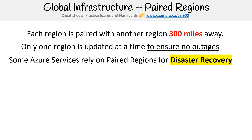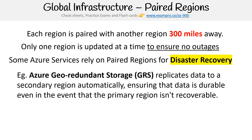Some Azure services rely on paired regions for disaster recovery. When you turn those services on, they're automatically going to launch in that paired region. One service — well, it's a feature of storage — is called Azure geo-redundant storage. It replicates your data to a secondary region automatically, ensuring that the data is durable even in the event that the primary region isn't recoverable.